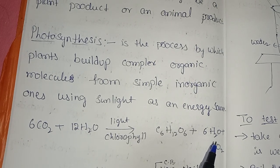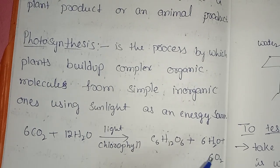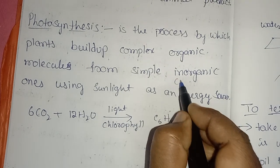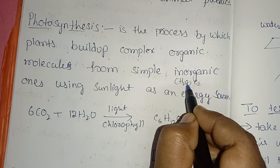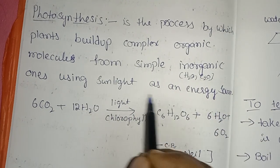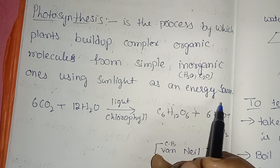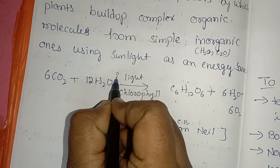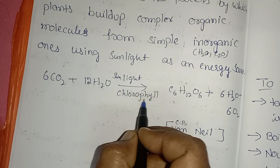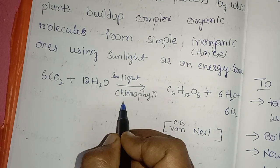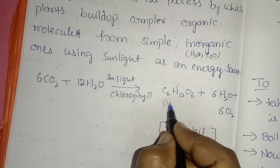Only green plants perform photosynthesis. It is a process by which plants build up complex organic molecules from simple inorganic ones — using water from the earth and carbon dioxide from the atmosphere. In the presence of sunlight as an energy source, photosynthesis occurs in the chlorophyll of the plant. The balanced equation: 6CO₂ + 12H₂O, in the presence of sunlight and chlorophyll, produces starch.